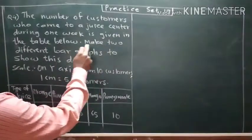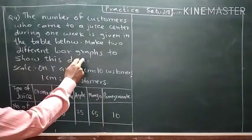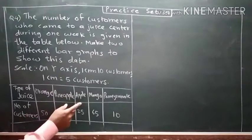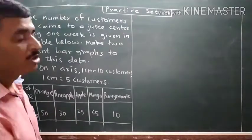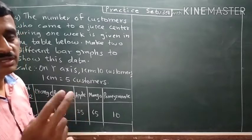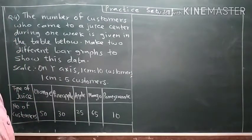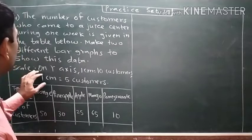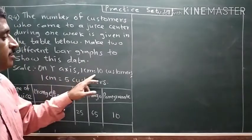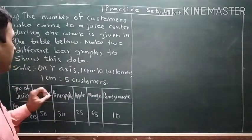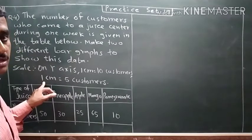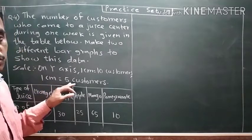Now make two different bar graphs to show this data. To show this data on the graph, we have to prepare two bar graphs, and for that we have to take two different scales. The first scale on the y-axis: one centimeter is equal to ten customers. And for the second graph, we have to take the scale: one centimeter is equal to five customers.